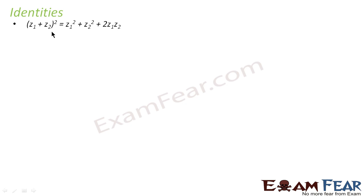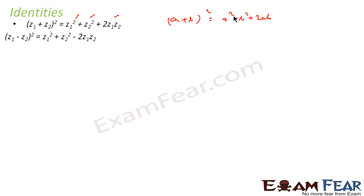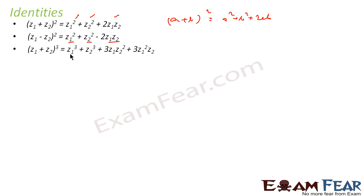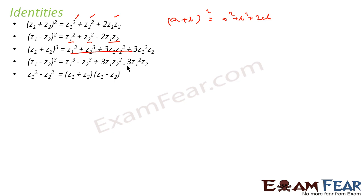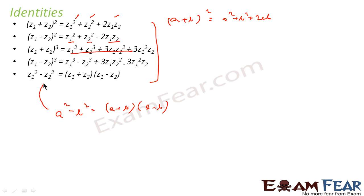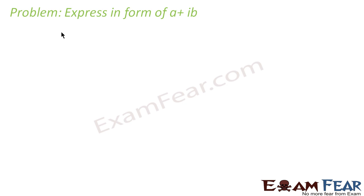Now we will talk about identities. When you say (z₁ + z₂)², it becomes z₁² + z₂² + 2z₁z₂ — similar to the normal formula (a+b)² = a² + b² + 2ab. Similarly, (z₁ − z₂)² = z₁² + z₂² − 2z₁z₂. For (z₁ + z₂)³ = z₁³ + z₂³ + 3z₁z₂² + 3z₁²z₂. And z₁² − z₂² = (z₁ + z₂)(z₁ − z₂). So all the formulas are the same as for real numbers.